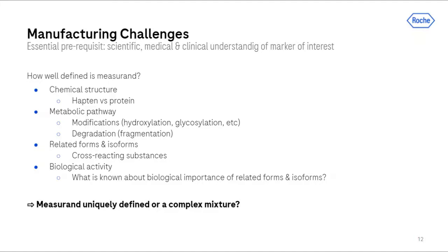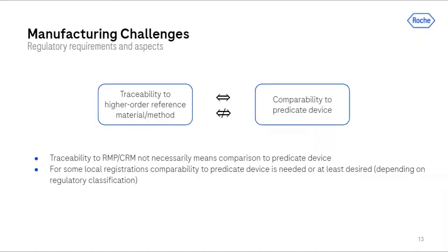In a nutshell, one has to get a clear picture and definition of the measurand — only this understanding allows setting up traceability and specificity of an assay. Without any doubt, traceability to a higher-order reference material or method has to be the goal of an IVD development. However, registration in some countries requires or would at least benefit from comparability to a comparable IVD predicate device. The traceability of the own IVD product might or might not allow comparability to the competitor product, depending on its calibration hierarchy. Once comparability becomes clear, the registration strategy may be discussed with the respective regulatory bodies.